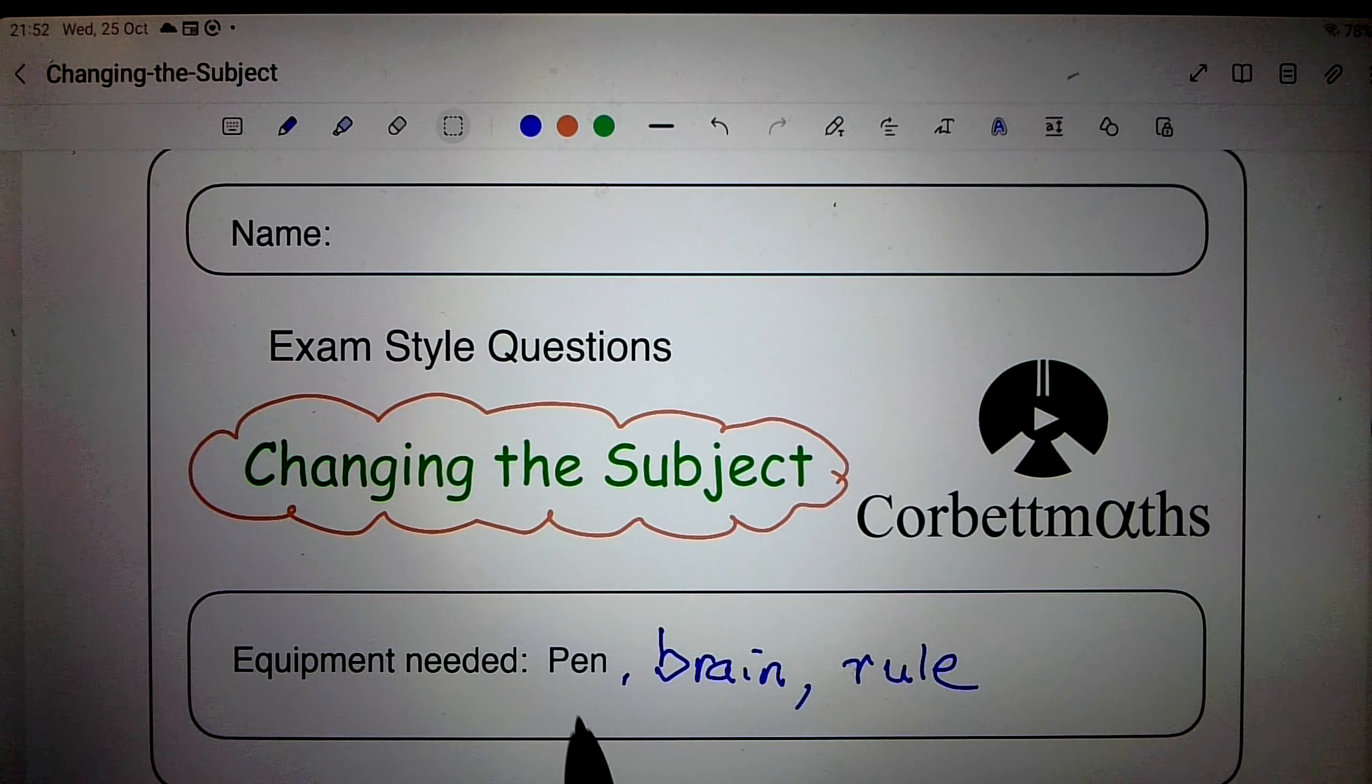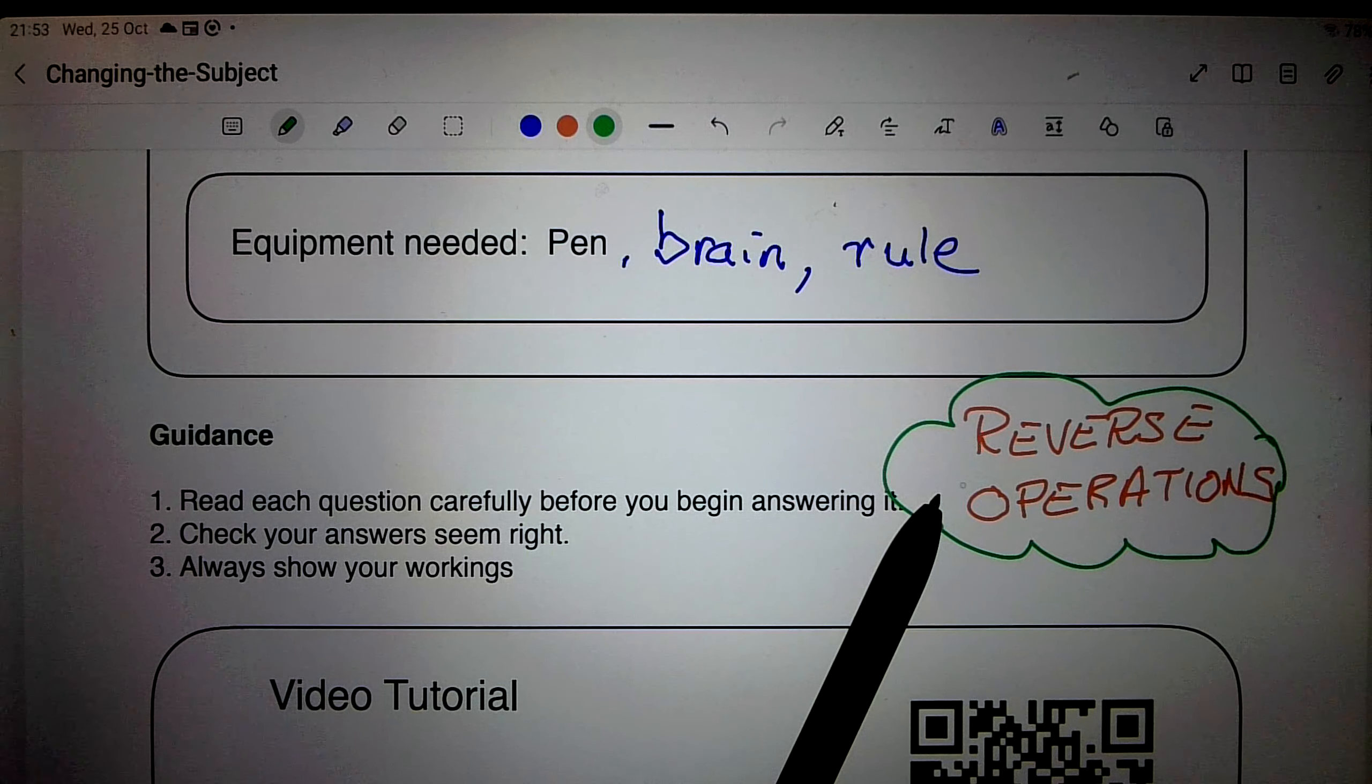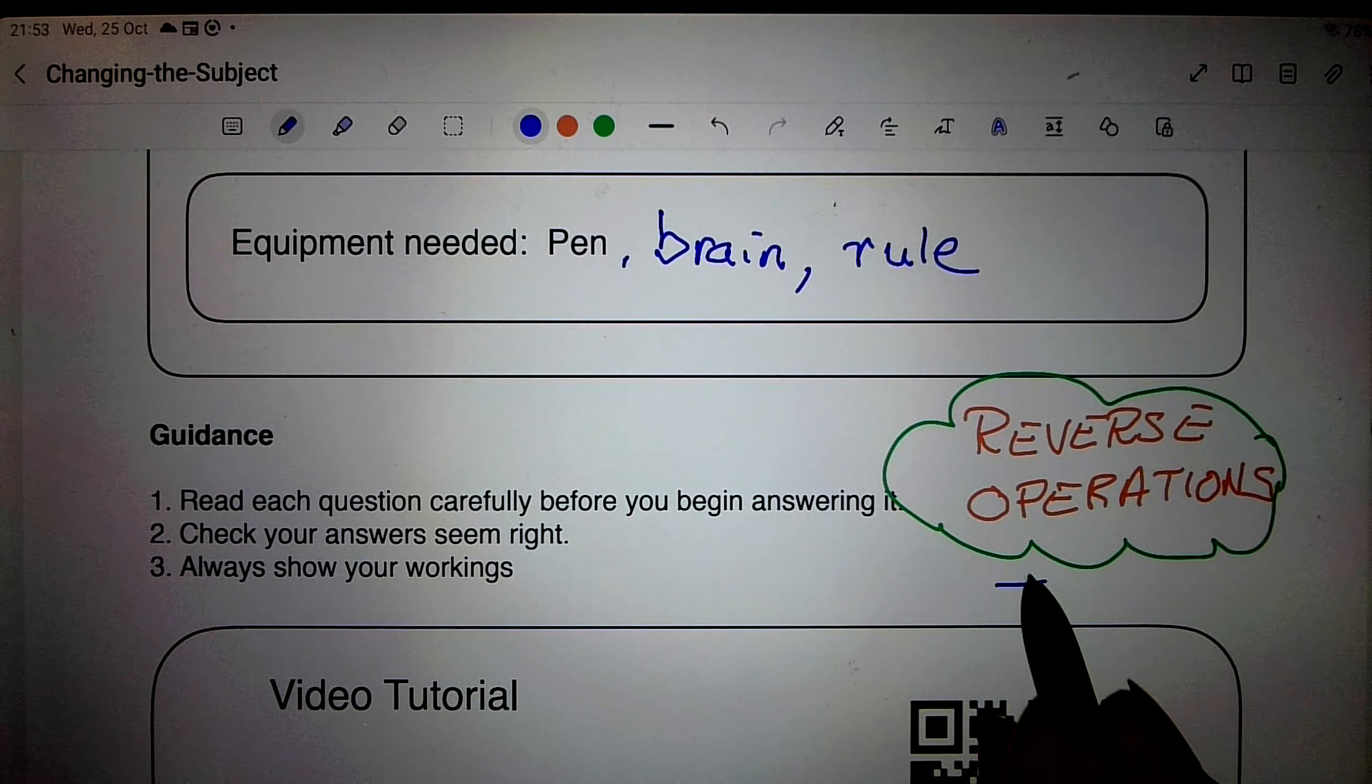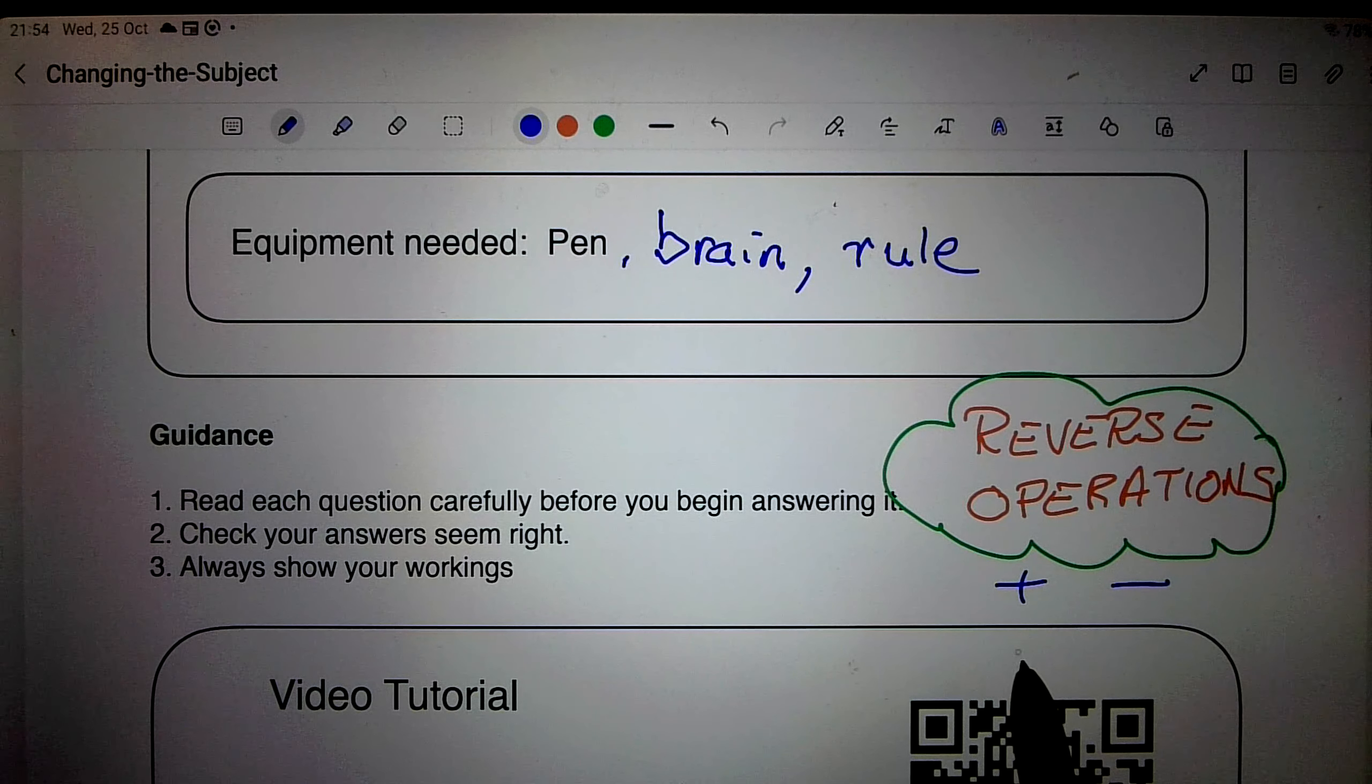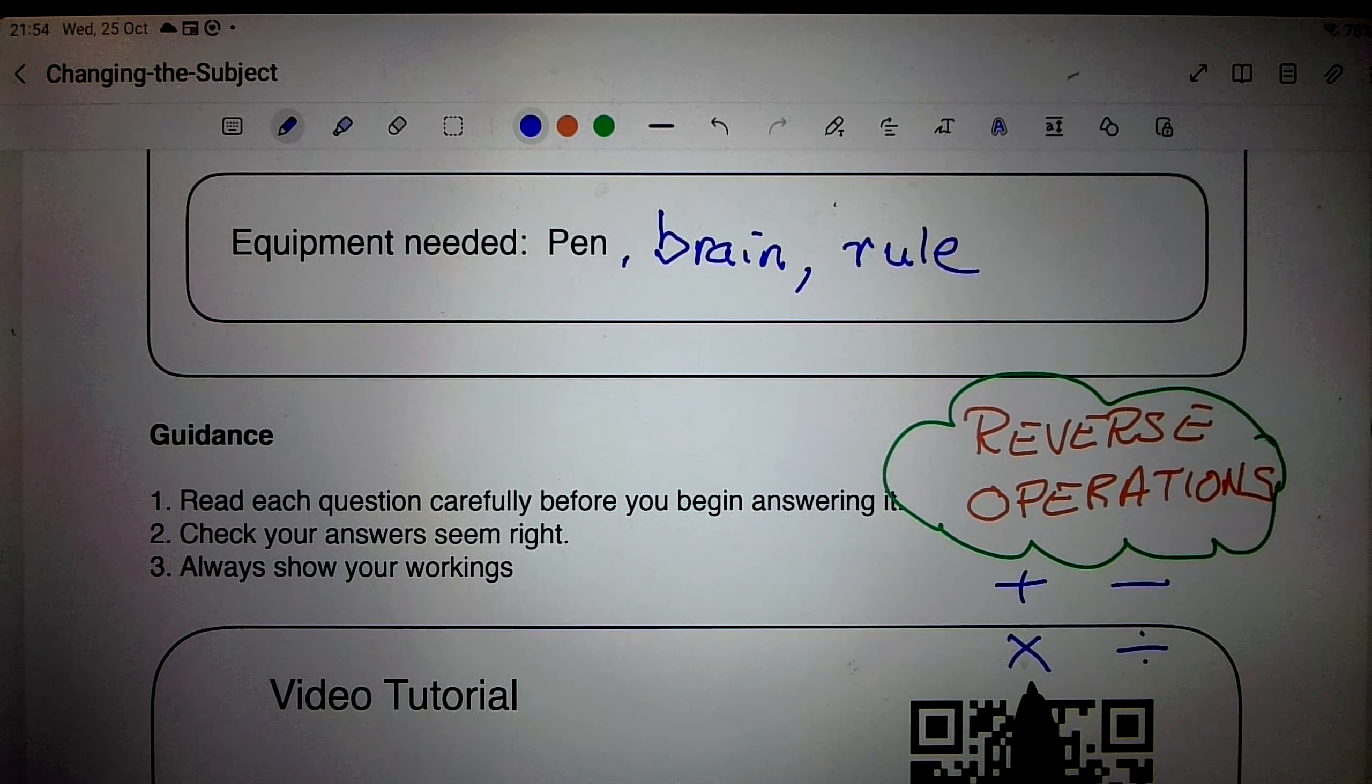Now Mr Corbett reckons you need a pen, and of course he's absolutely right, but you also need a brain and a rule to work with, and there's something else as well. You also need to know about reverse operations, and of course you know that the opposite of plus is minus, the opposite of minus is plus, the opposite of multiply is divide, and the opposite of divide is multiply. We're going to need that in a moment or two.